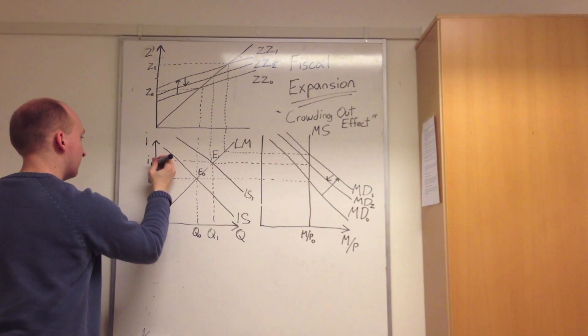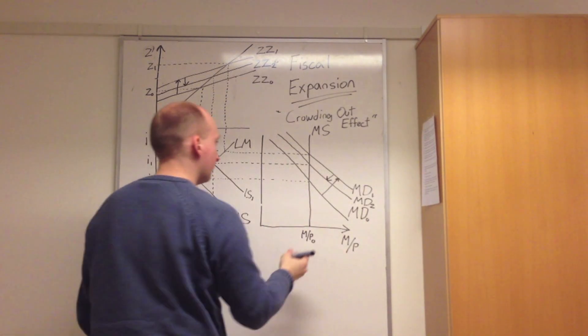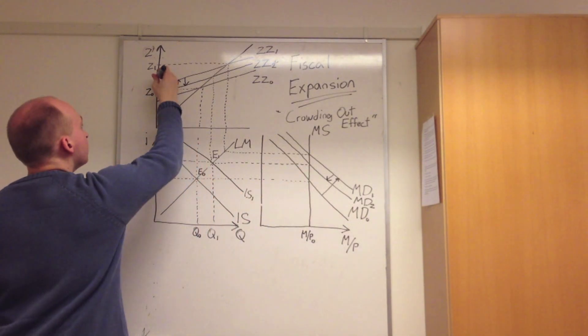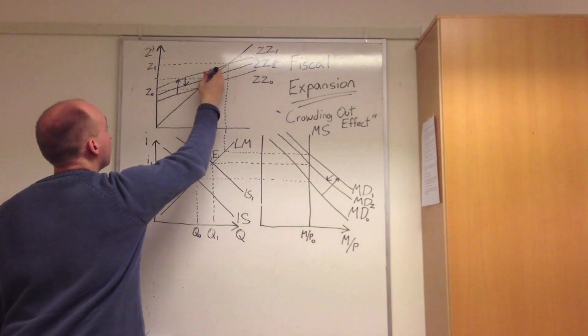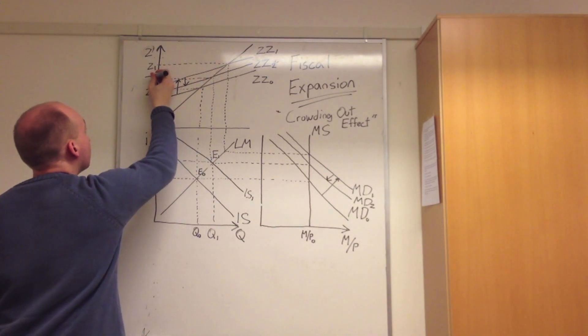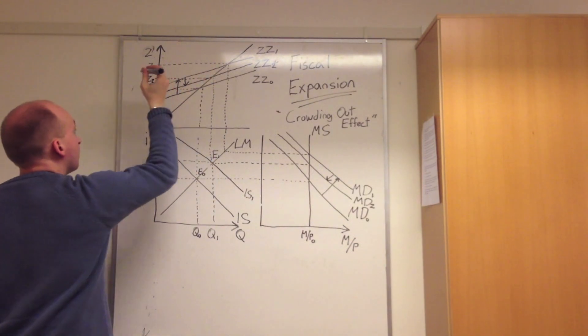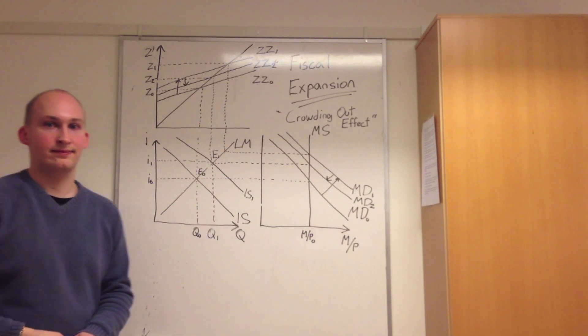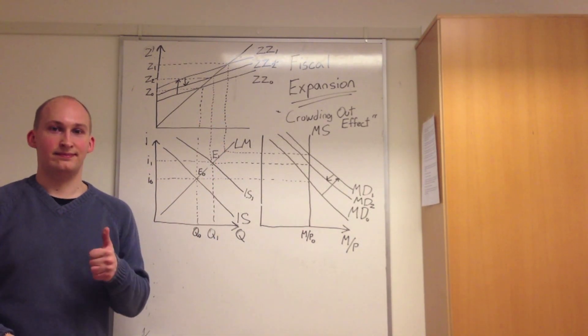We also see that there is nothing more to do in the financial market, so we finish off by denoting this higher level of demand by ZZ2. And there you go folks, that is how you explain the fiscal expansion. A job well done.